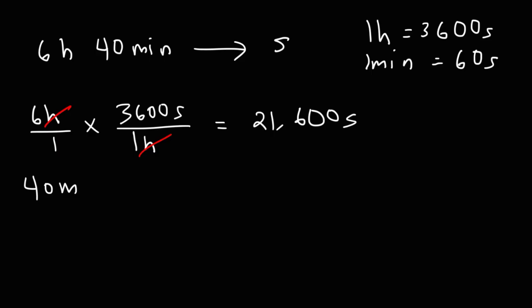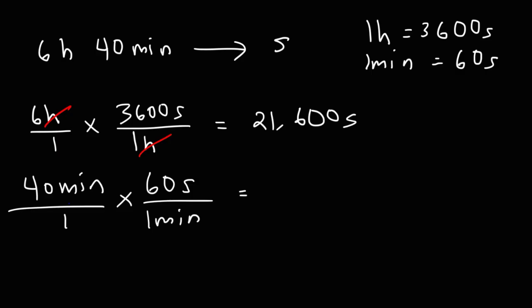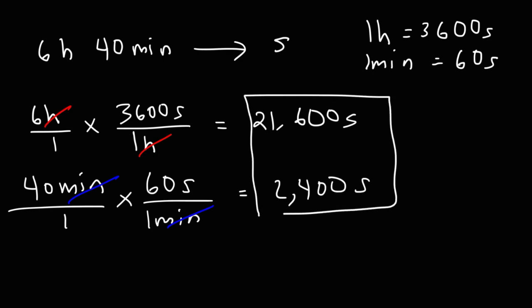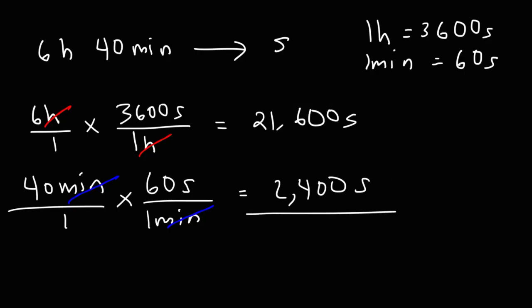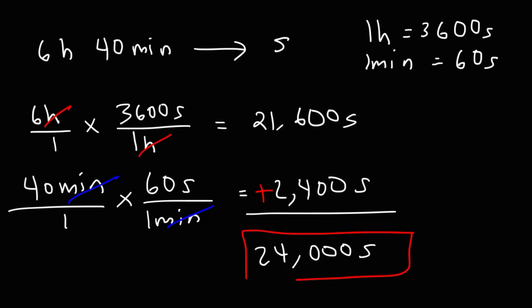Next, let's convert 40 minutes into seconds. There are 60 seconds in each minute, so 40 times 60 gives 2,400 seconds. Now we take the sum: 21,600 plus 2,400 gives us a total of 24,000 seconds. So that is equal to 6 hours and 40 minutes.